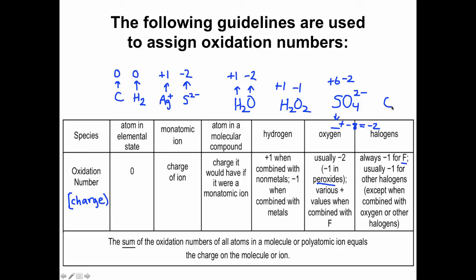One more example: the compound OF₂. We have two rules — oxygen is usually minus two, fluorine is always minus one. If we used minus two for oxygen and minus one for fluorine, it wouldn't add up to zero. Fluorine trumps oxygen, so fluorine has an oxidation number of minus one. With two fluorines, that's a total of minus two, so to add up to zero overall, oxygen must be plus two. Note that oxidation numbers for an element can vary depending on the compound — oxygen is not always minus two or minus one; it can be plus two as well.